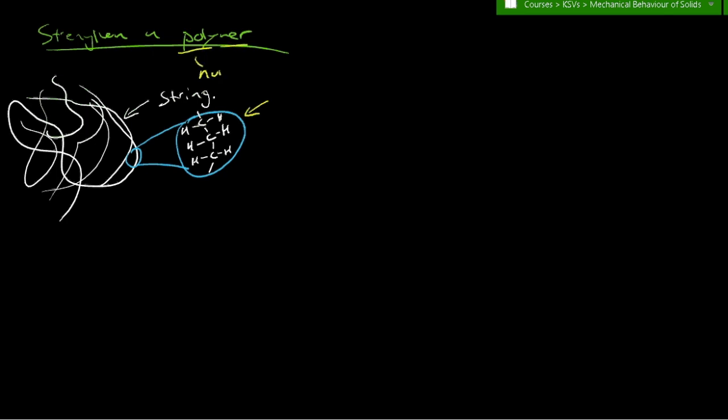Poly meaning numerous, and mer referring to the repeating units. So actually, we start to see a similarity between the way we study a metal or a ceramic, and we look at a unit cell. Right? And a polymer now, we have a unit that repeats.